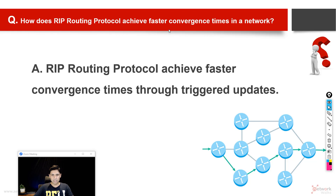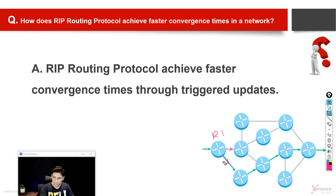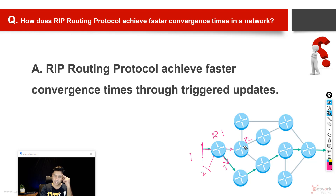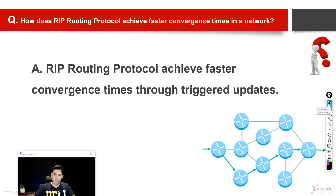Another question: how does RIP routing protocol achieve faster convergence times in a network? RIP achieves faster convergence through triggered updates — it does not depend only on periodic updates. For example, every 30 seconds a router sends updates to its neighbor. But if before those 30 seconds a network goes down, R1 will immediately notify everyone that a network, say 10.0.0.0, is down. This is called a triggered update, and it improves convergence time.